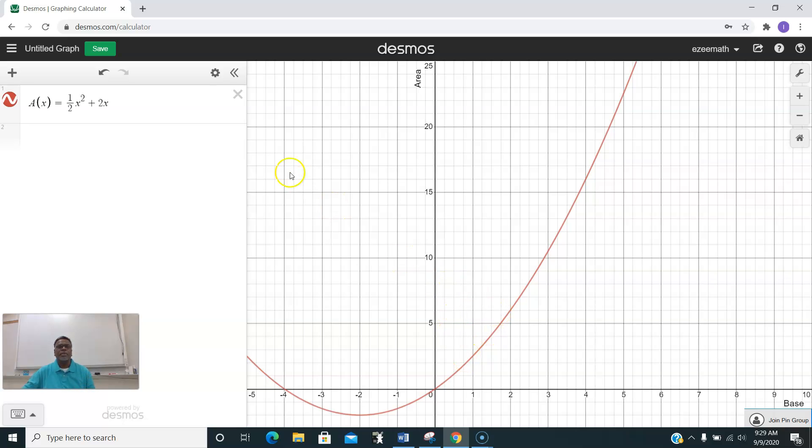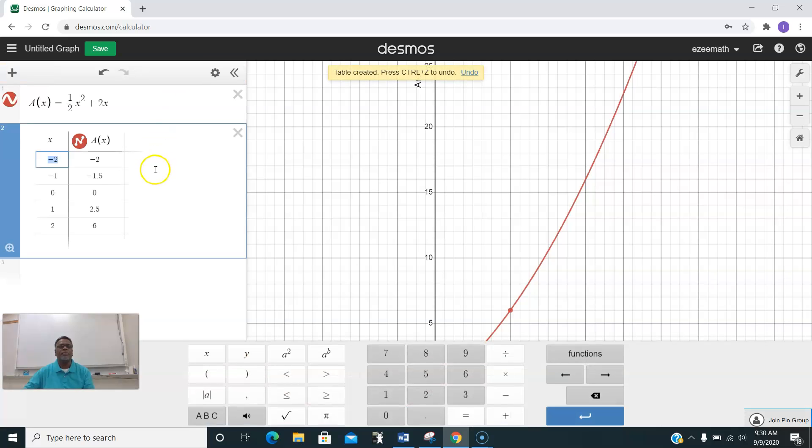I'll go to the settings here. You can see the edit list. You have an option converting the given function into a table. So click on the table. Now you got your values starting from zero. If the base is zero, then the area of a triangle becomes zero.